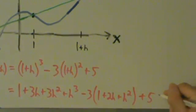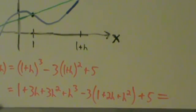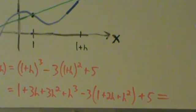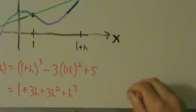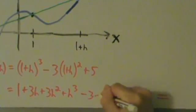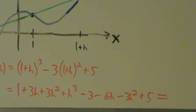Now let's distribute the negative 3. We're going to have minus 3 minus 6h minus 3h squared. So putting that all together, we have 1 plus 3h plus 3h squared plus h cubed, then minus 3 minus 6h minus 3h squared, plus 5.